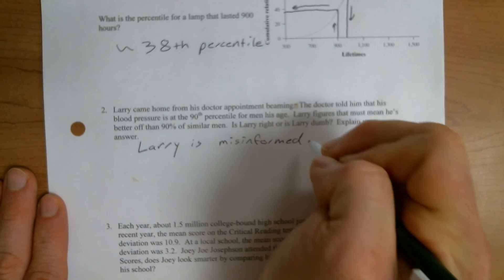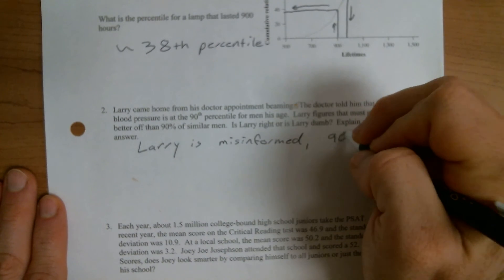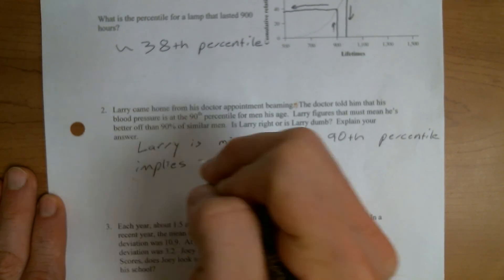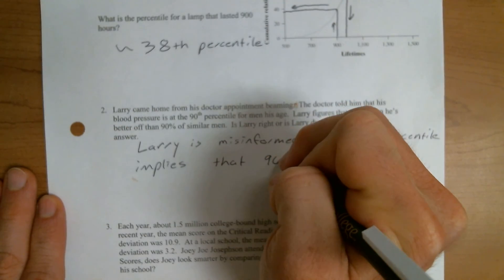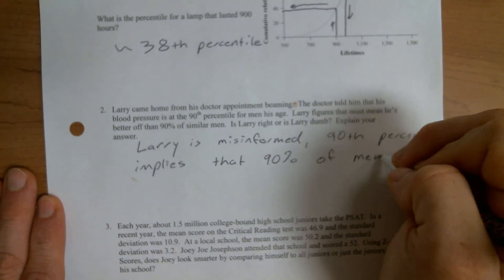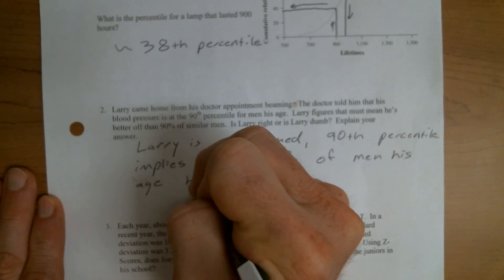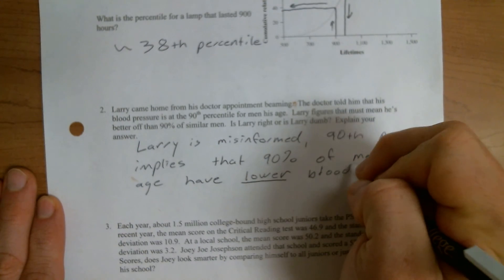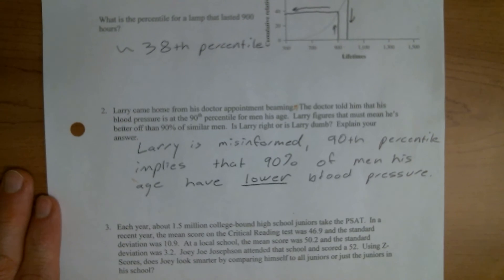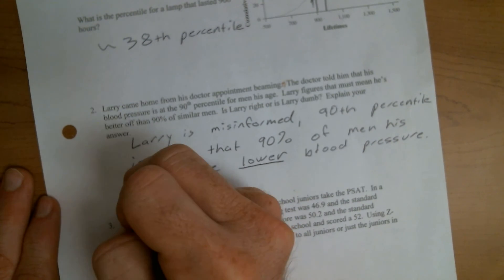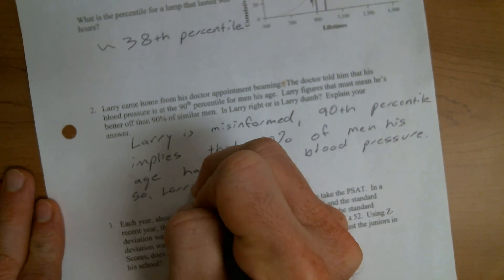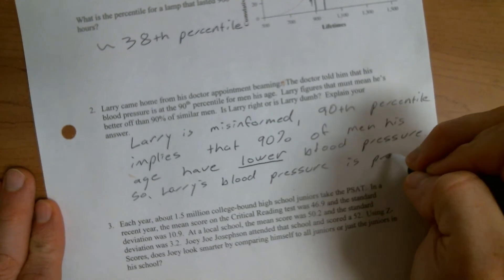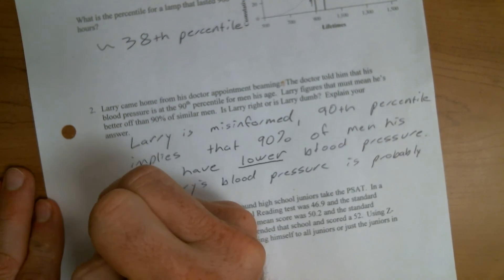90th percentile implies that 90% of men his age have lower blood pressure, which means Larry probably has high blood pressure. So Larry's blood pressure is probably really high.